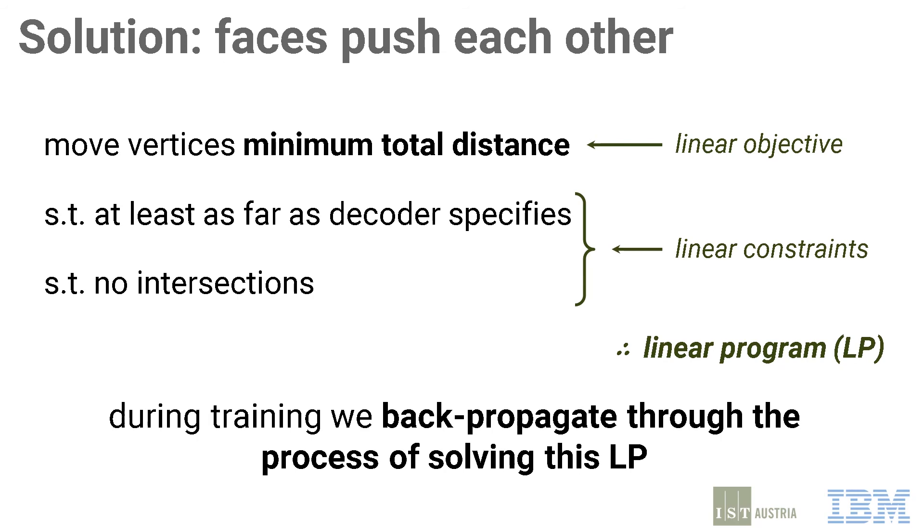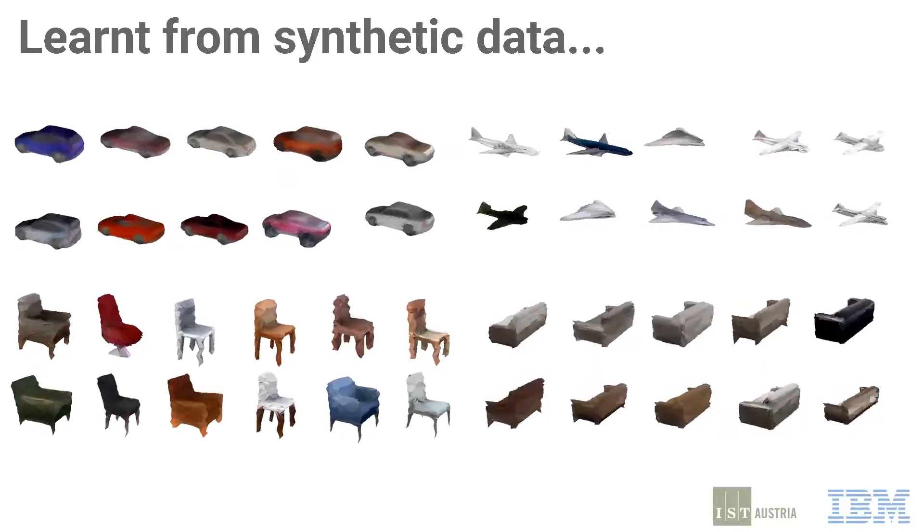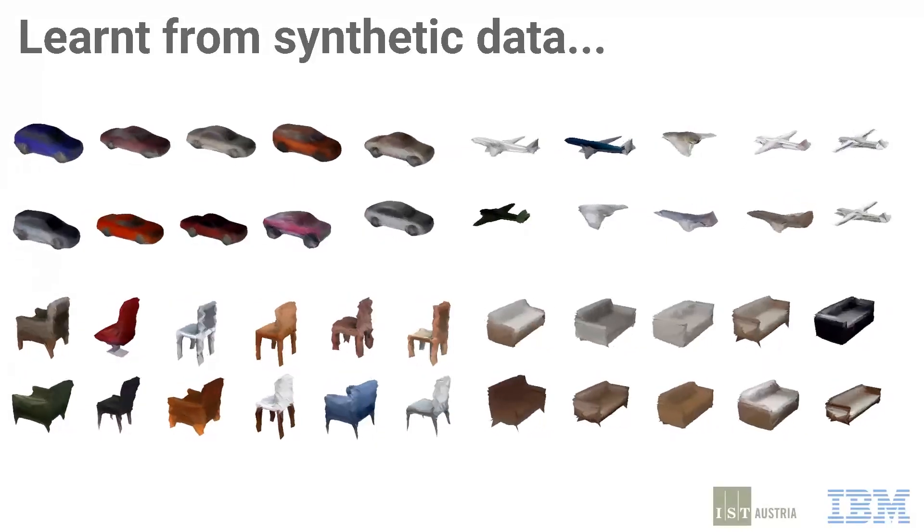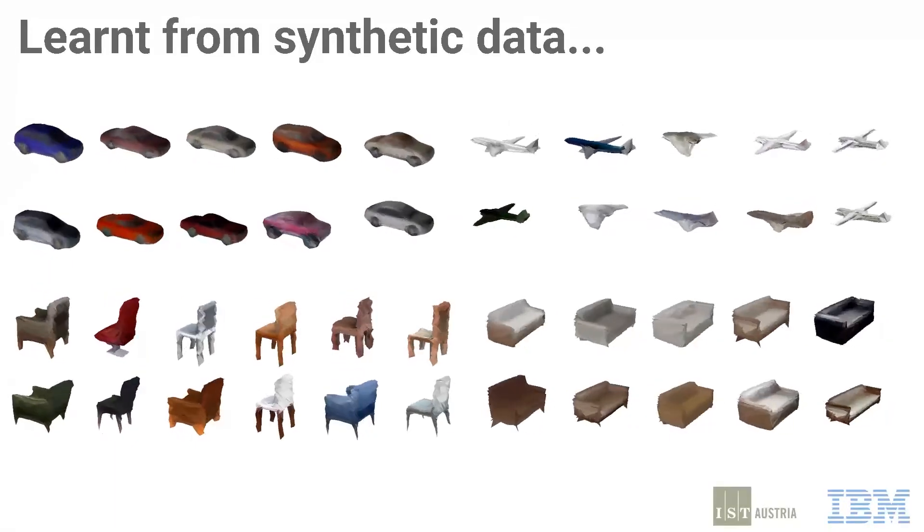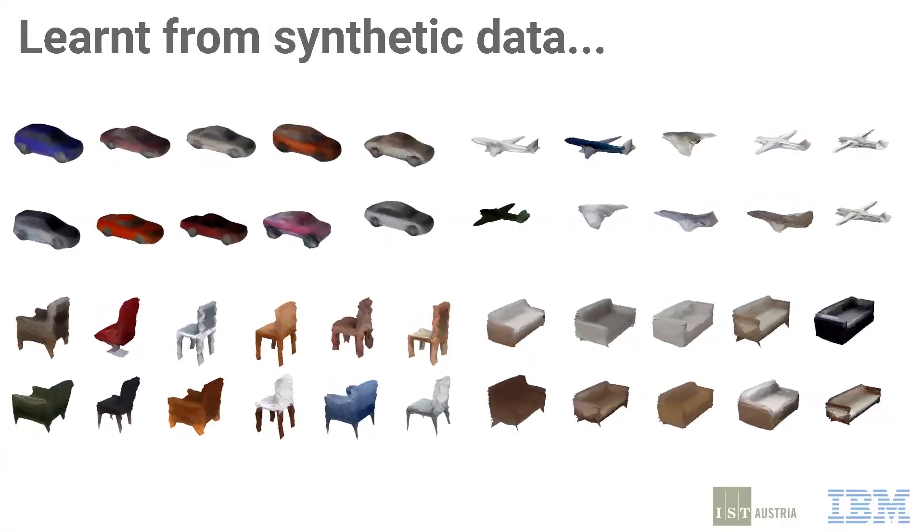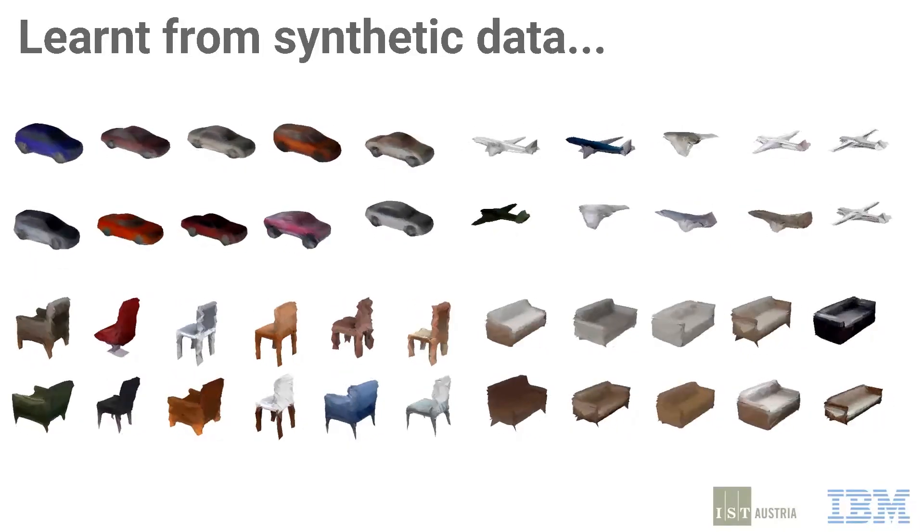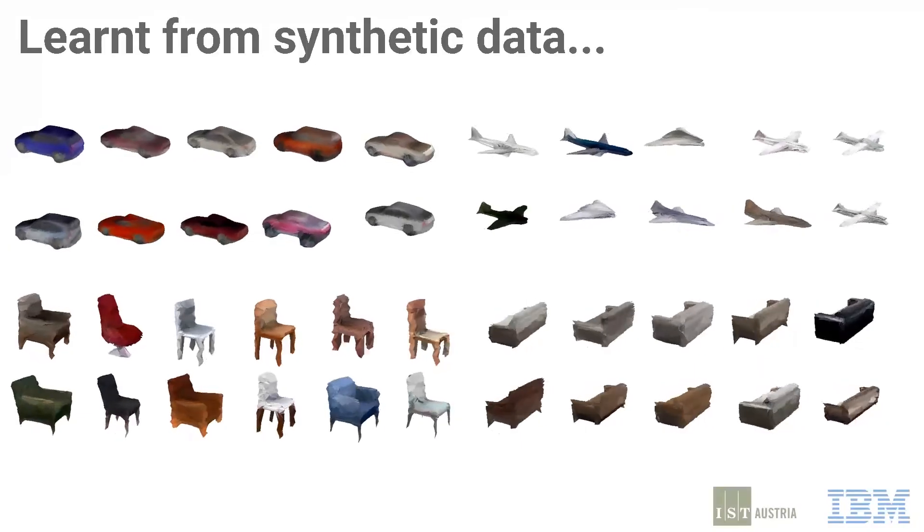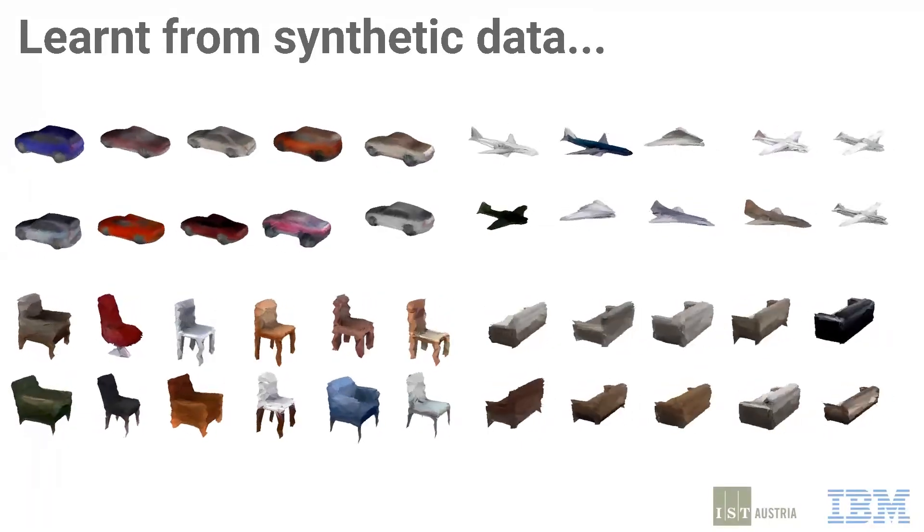We evaluate our method on four classes of synthetic images and two classes of natural images. Our first experiments use renderings of ShapeNet meshes, though note that the model never sees these meshes, only the renderings. Here we see the qualitative results on cars, chairs, aeroplanes and sofas, which show that the model produces easily recognisable and diverse samples for every class.